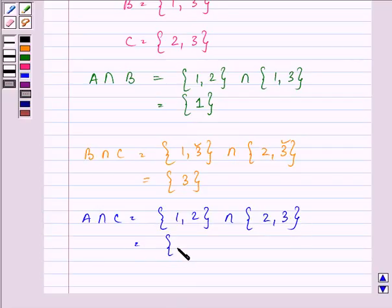So, the element common to them is 2. Now, these are all non-empty sets.